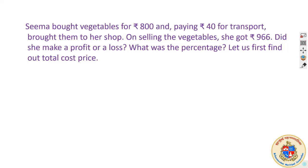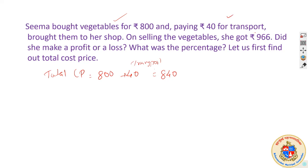What is the cost price in this transaction? Total cost price — the amount invested by Sima — equals the cost of vegetables, which is Rs. 800, plus Rs. 40 for transport. So the total investment or cost price is Rs. 840. Since she got Rs. 966, we can see it is profitable. Profit equals 966 minus 840, which is Rs. 126.